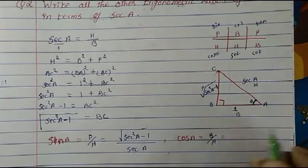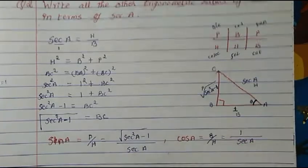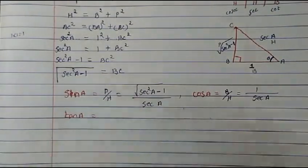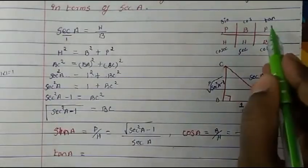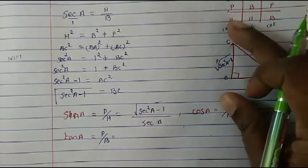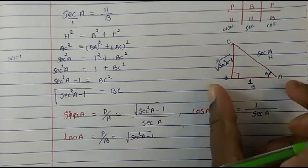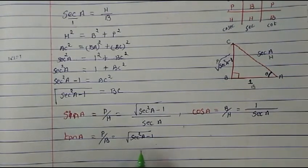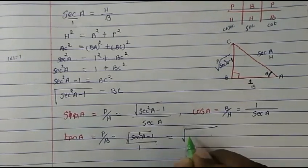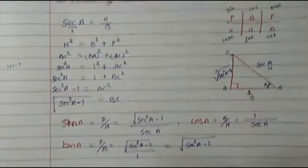Next, cos A: cosine is base upon hypotenuse. Base is 1 and hypotenuse is sec A, so cos A = 1/sec A. Then tan A: tangent is perpendicular upon base. Perpendicular is √(sec²A − 1) and base is 1, so tan A = √(sec²A − 1). Writing 1 in the denominator doesn't change the value.